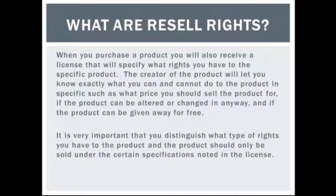When you purchase a product, you will also receive a license that will specify what rights you have to the specific product. The creator of the product will let you know exactly what you can and cannot do, such as what price you should sell the product for, if the product can be altered or changed in any way, and if the product can be given away for free. It is very important that you distinguish what type of rights you have to the product, and the product should only be sold under the certain specifications noted in the license.